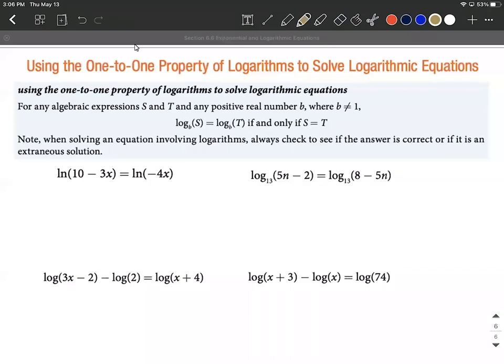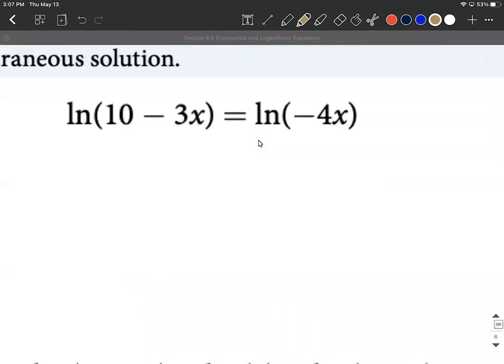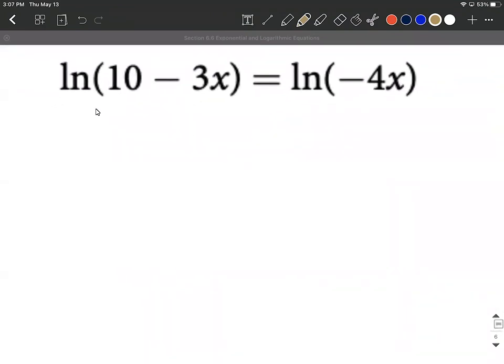One-to-one property of logarithms. We're going to use this and solve some logarithmic equations. So what the one-to-one property says is basically if you can rewrite both sides of an equation so it's a log with the exact same base on both sides and it's a single log on each side with nothing else on either side, you're allowed to drop these logarithms and set whatever's on the inside equal to one another and solve down the resulting equation. So a few quick easy examples and then a few more difficult ones.